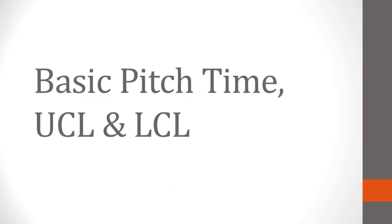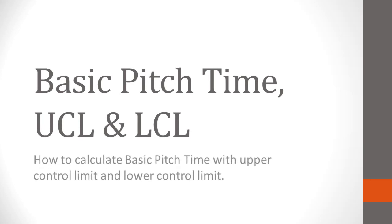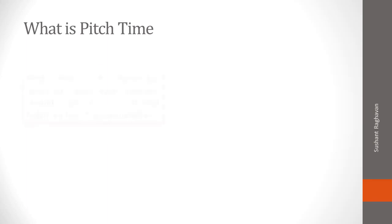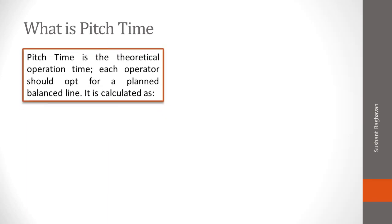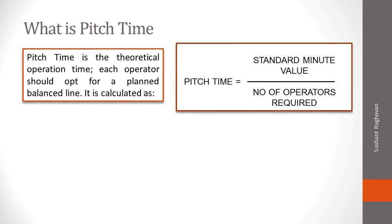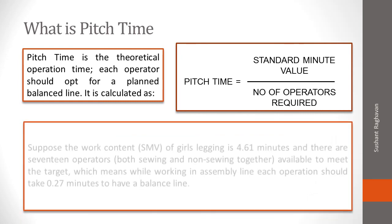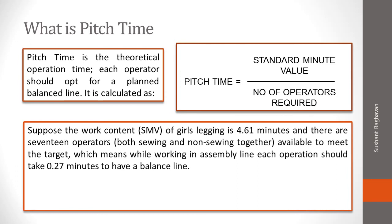Basic pitch time, upper control limit, and lower control limit — how to calculate basic pitch time with upper and lower control limits. Pitch time is the theoretical operation time each operator should opt for in a planned balance line. It is calculated as: Pitch Time = Standard Minute Value (SMV) divided by number of operators required. For example, if the work content SMV of a girls' legging is 4.61 minutes and there are 17 operators — both sewing and non-sewing together — available to meet the target, each operation should take 0.27 minutes to have a balanced line.